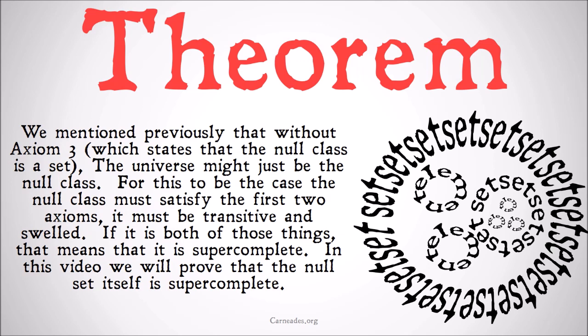The first two axioms say that the universe must be transitive and it must be swelled. For both of those things to be true, in other words, the universe must be super complete. So if we want to test whether or not a certain set or class is the universe, that class must be super complete. Any super complete class could be the universe.